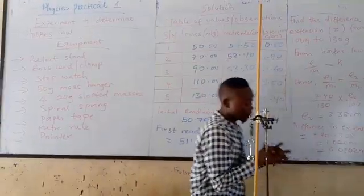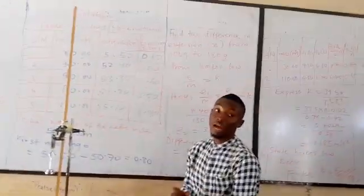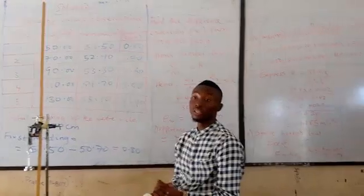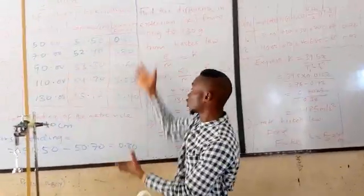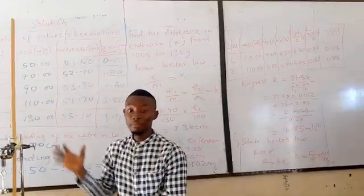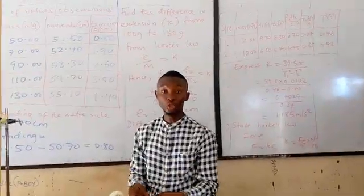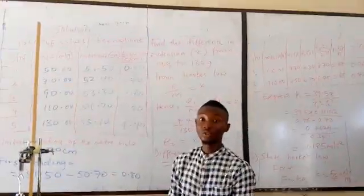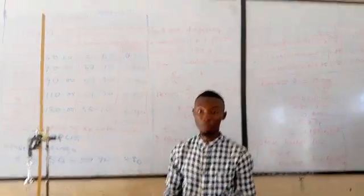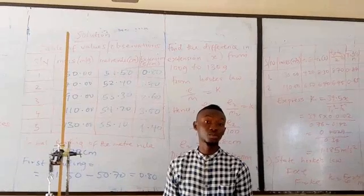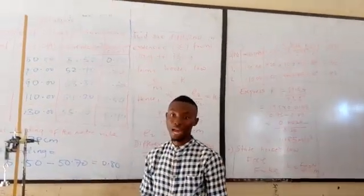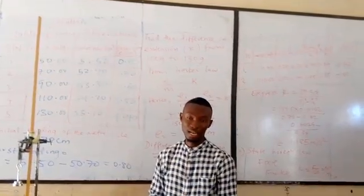So the next thing that was asked there is that we should plot a graph of extension on the vertical axis against the mass. So the extension will be plotted against mass. Make sure you are plotting your graph and you choose an appropriate scale so that your graphs will align properly. So after plotting the graph, you are also expected to find the intercept of the graph on the y-axis, that is on the vertical axis.